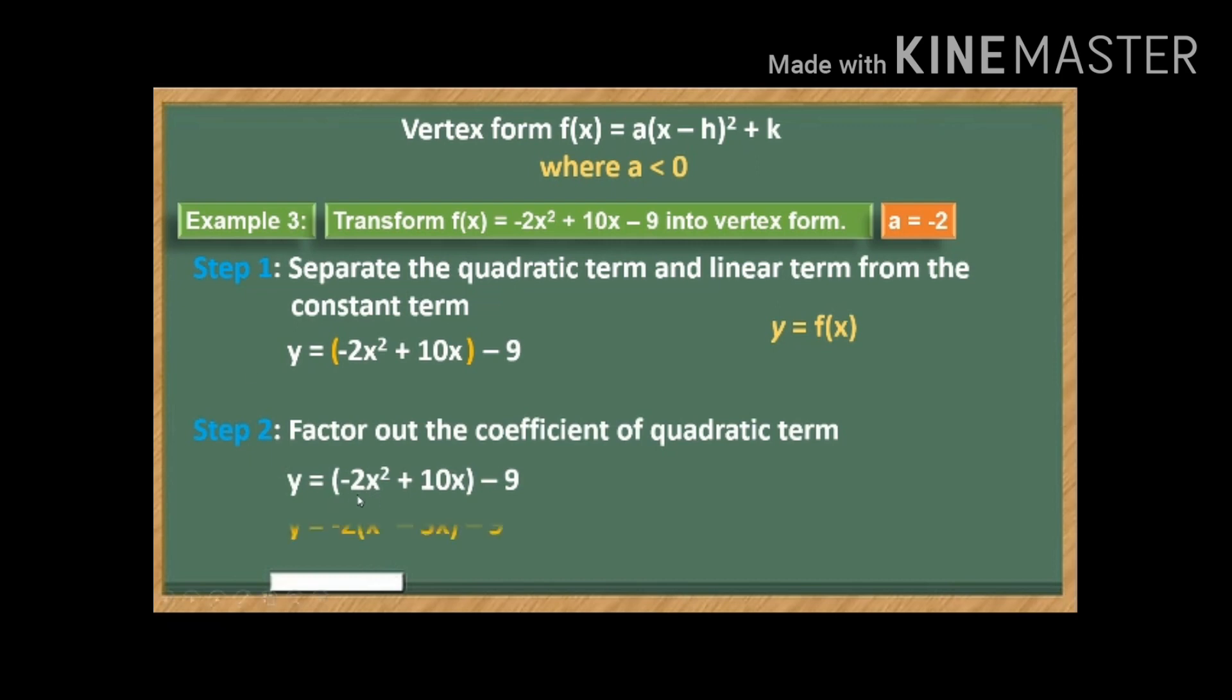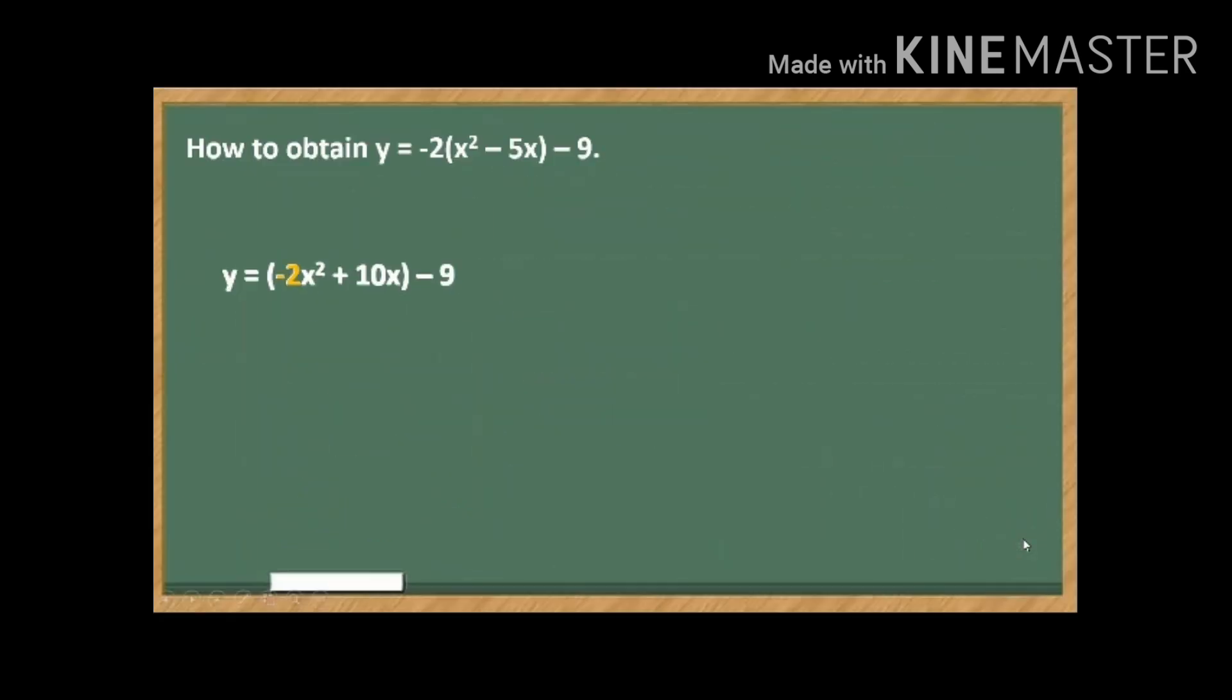So we have here, then again, let me show you how to factor out negative 2. So let's continue. After the same process, so copy, then we need to factor out negative 2. So what we're going to do is divide this quadratic term by negative 2 and also this linear term by the same number, negative 2.